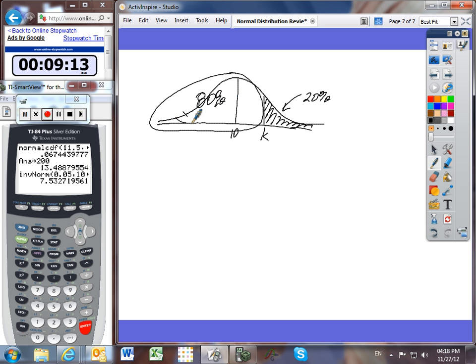If you want to find inverse norm, we need to change it into a less than K problem. That is to say, if the probability of X being greater than K is equal to 20%, the probability of X being less than K is equal to the remaining percent, which is 80%. We must have a less than if we are going to use inverse norm.